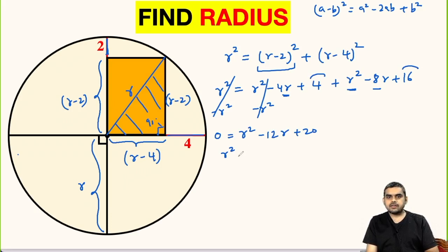Here we get a quadratic equation r squared minus 12r plus 20 equal to 0. We will use the factorization technique to factor this out. This will be r squared minus 10r minus 2r plus 20 equal to 0.